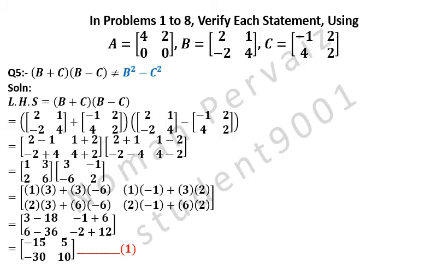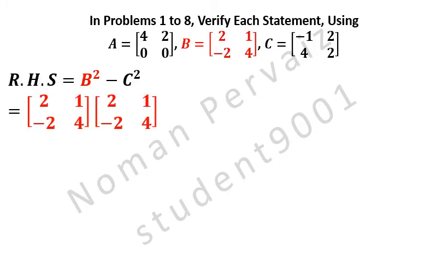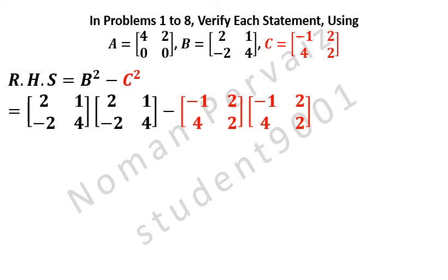Next, we take the right-hand side of the above question, as indicated by blue color, which is B squared minus C squared. So right-hand side is written as B squared minus C squared, is equal to: B squared means the value of matrix B is written 2 times, minus comes as it is, and C squared means the value of matrix C is written 2 times.